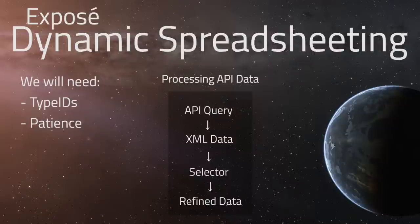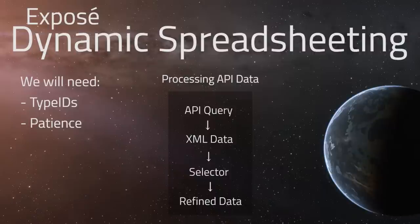For example, if we're looking for type ID 34, which is Tritanium, the API call asks a server — it could be the EVE Online server now that CREST is available, or EVE Central's API, or the API we're looking at today from a site called EVE Market Data. We request the type IDs and get back a page of data called XML.